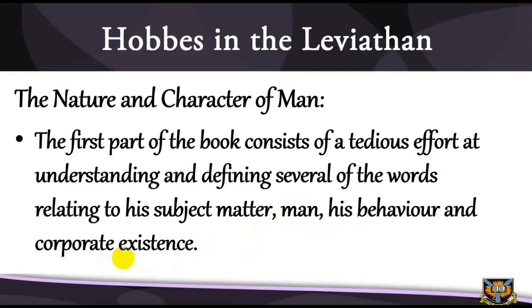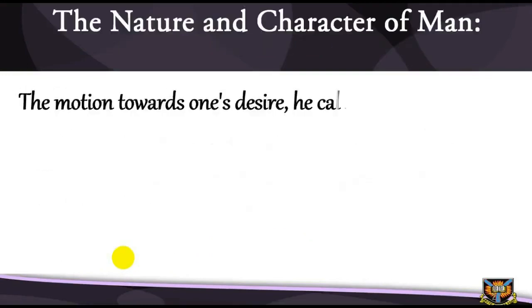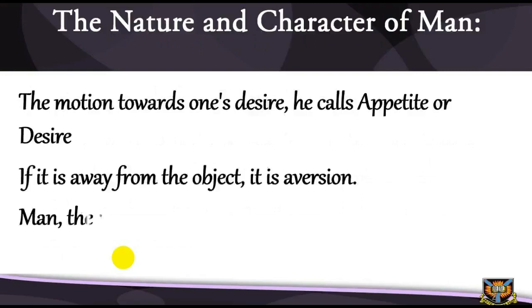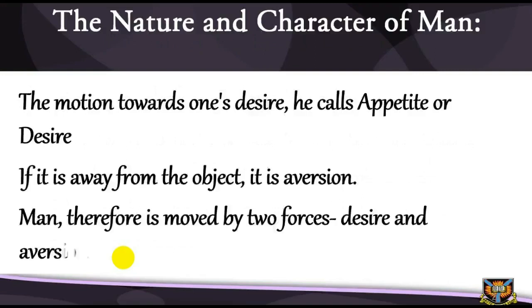In examining the faculties and passions of man, Hobbes came to the conclusion that automata have artificial life and that man is mainly motion. All his actions, which Hobbes calls endeavour, are externally stimulated. The motion towards one's desire he calls appetite or desire; if it is away from the object, it is aversion. Man is therefore moved by two forces: desire and aversion. Fear backed by hope is courage; anger; constant hope is confidence; constant despair is diffidence. In this way, Hobbes derives and defines several of the words covering the vocabulary of human passion.